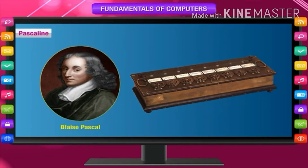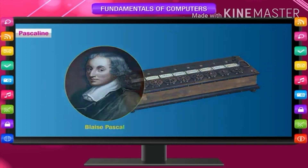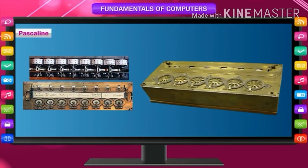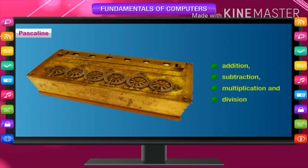Pascaline: In 1641, Blaise Pascal invented the first mechanical calculator called Pascaline. It had a box with eight movable wheels called dials which worked just like a telephone dial. It could handle decimal values by rotating a wheel from one to nine steps. It was used to perform calculations like addition, subtraction, multiplication, and division of numbers up to hundreds and thousands.